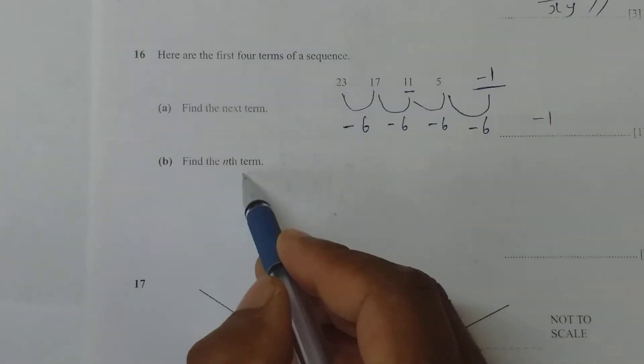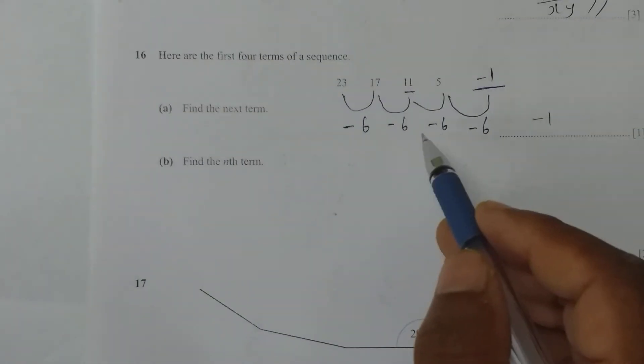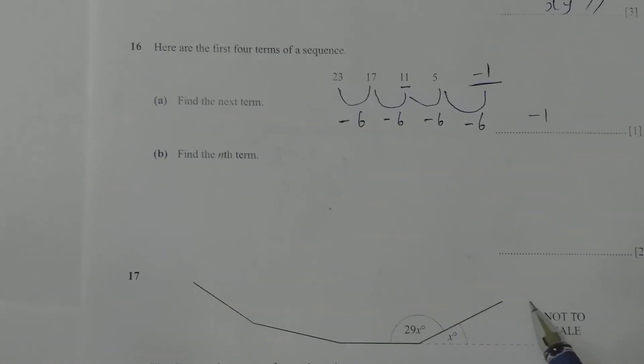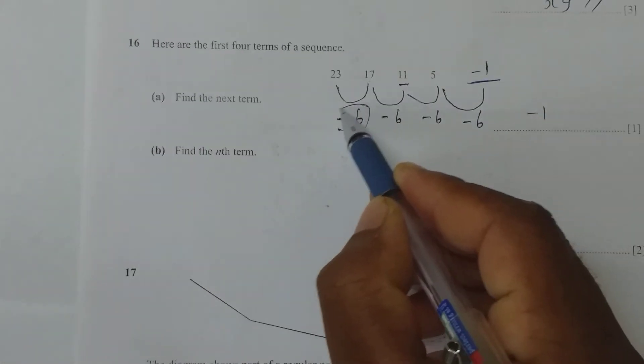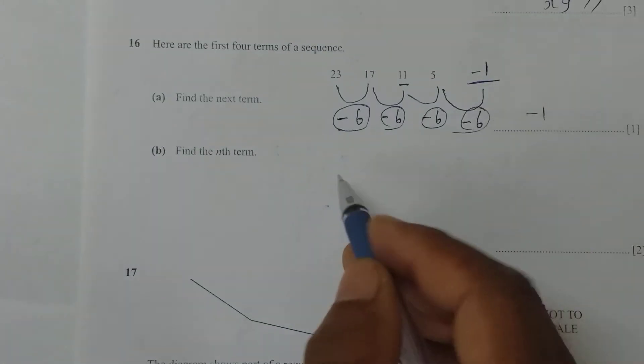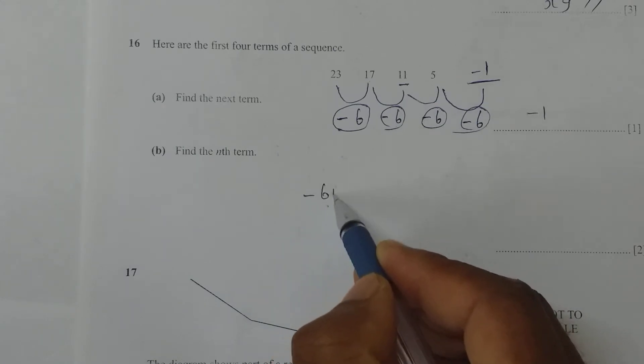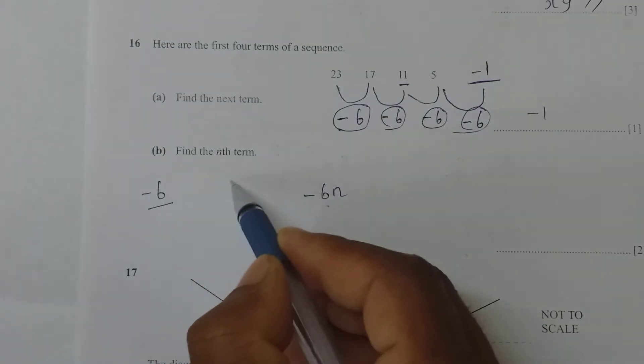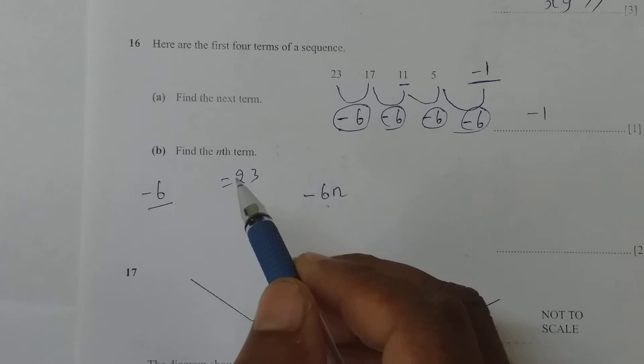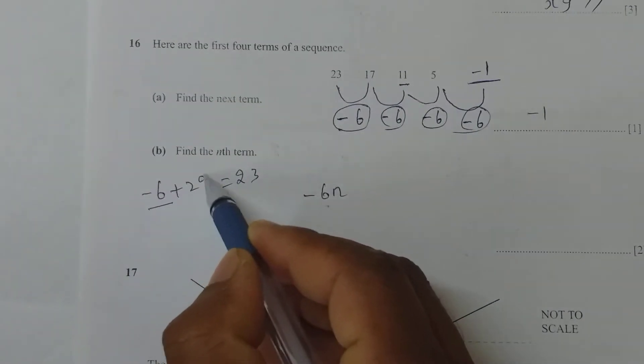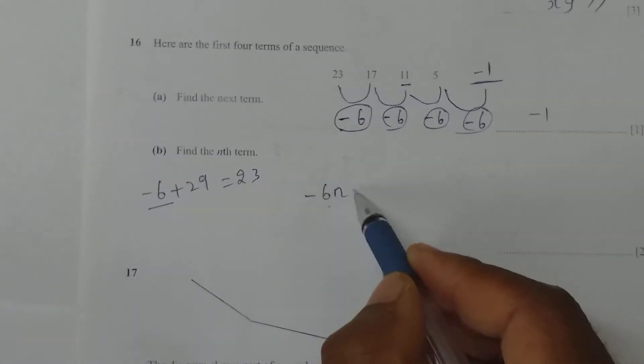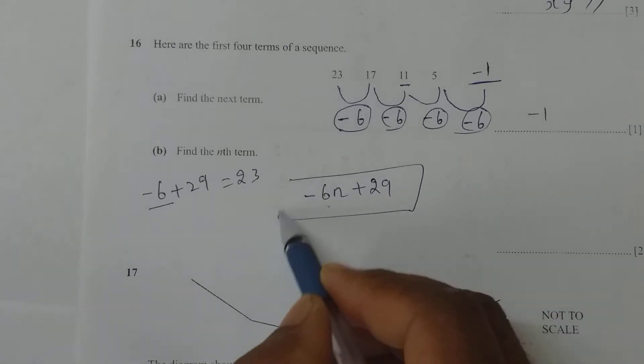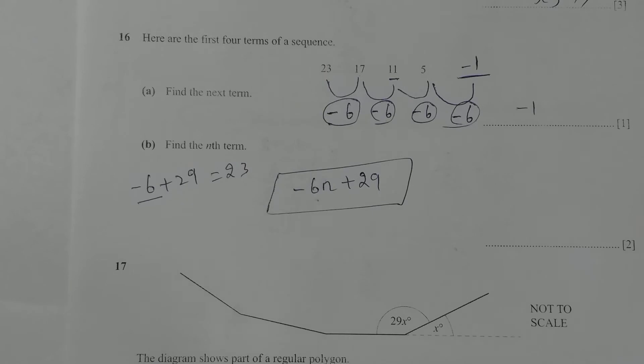Now, find the nth term. It is the first difference, so we can get the nth term directly. What is the difference everywhere? Minus 6. So nth term will be -6n. Next, to this -6, what should I add to get 23? I should add 29 to get 23. So the nth term is -6n + 29. Like this, we find the nth term for first difference.